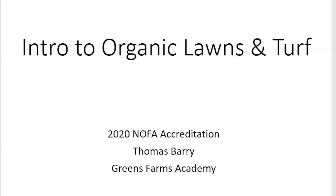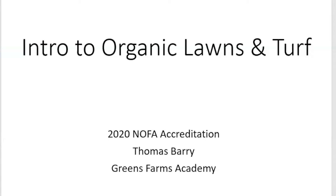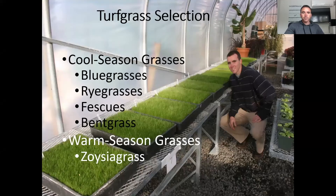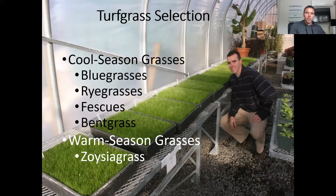One of the first things we will be discussing are the steps to create healthy turf grass, starting with turf grass selection — choosing the proper turf grass for your site conditions. This is going to be based on certain variables in terms of soil types, sun versus shade, irrigated or non-irrigated, what the intended use for the grass is, as well as environmental considerations — which grasses are best in terms of requiring the fewest inputs like fertilizers and pesticides.